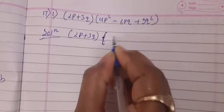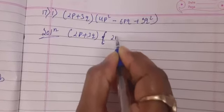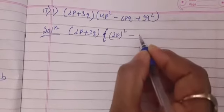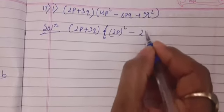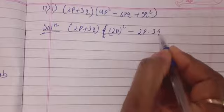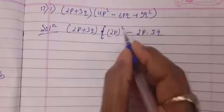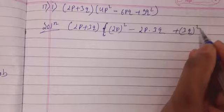So (2p)² - instead of writing 2pq what we will write? 2p × 3q. Can you see 2p × 3q? Here is (2p)² and last one is also (3q)² because 9 is square of 3 and 4 is square of 2.